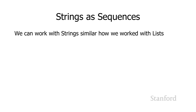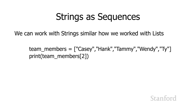If you want to do some fancier things with strings, one thing to be aware of is that strings actually work pretty similarly to lists. Lists and strings both act as sequences, and there are certain things you can do with sequences in Python. As we saw previously, to access individual elements in a list, we have the square bracket notation. For example, with a list of team members — Casey, Hank, Tammy — team_members[2] would print 'Tammy', since indexing starts at zero.